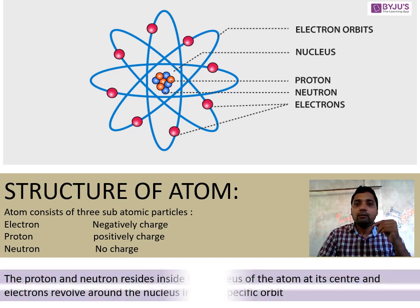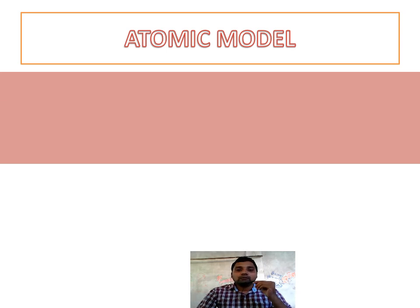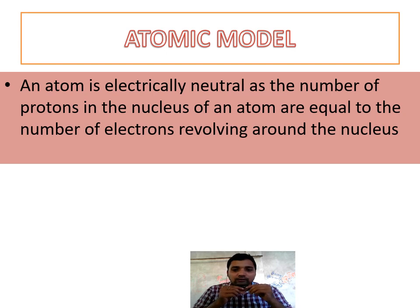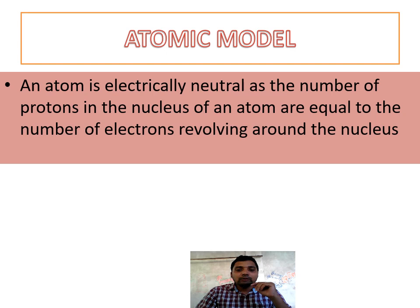Protons and neutrons are inside the nucleus of the atom and electrons revolve around it. In atomic models, all atoms are electrically neutral. Why are they electrically neutral? Because the number of protons equals the number of electrons — the number of positive charges equals the number of negative charges. When they lose or gain an electron, they change to a charged ion — positive or negative.